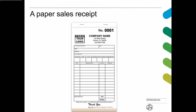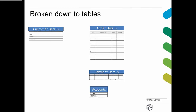If we wanted to store this in a database, we would typically break it down into several tables. We would have a table containing customer details — names and addresses. Order details — what they actually ordered, how many, and the amount. Payment details — how they paid for it. And accounts details — how much they had to pay. You can imagine these tables being used by different departments within the organization for different purposes.